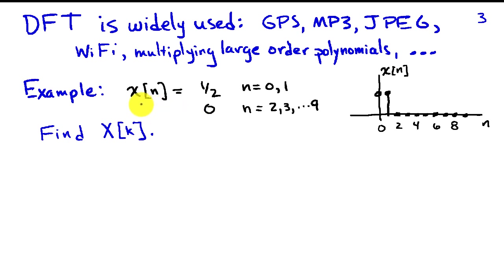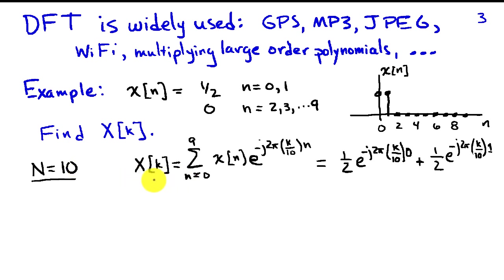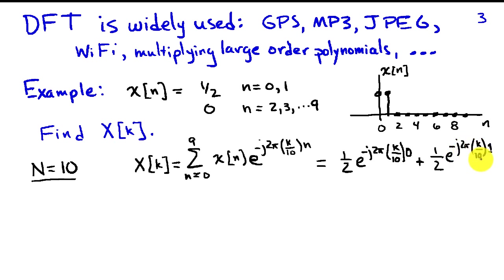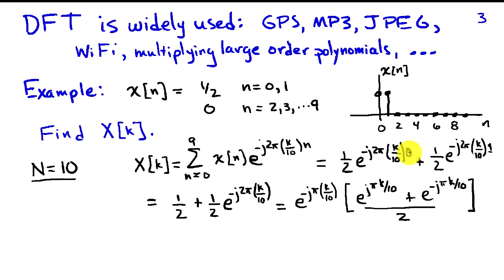If we're given a time signal x of n, which is 1/2 when n equals 0 and 1, and 0 when n equals 2 through 9, first we note that capital N equals 10. So the expression for X of k is the sum from n equals 0 to 9 of x of n times e to the minus j 2 pi k over 10 times n. Since only two values of x of n are non-zero, we write: 1/2 times e to the minus j 2 pi k over 10 times 0, plus 1/2 times e to the minus j 2 pi k over 10 times 1. The complex exponential to the 0th power is 1, so this becomes 1/2 plus 1/2 e to the minus j 2 pi k over 10.